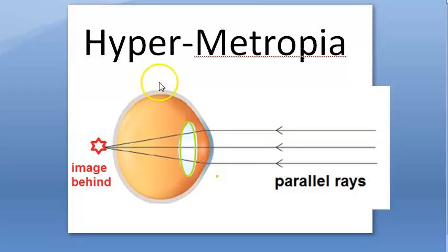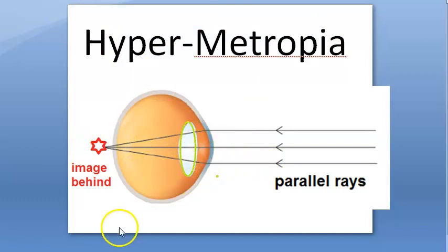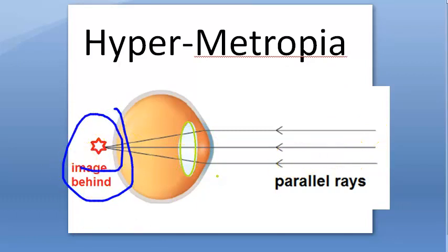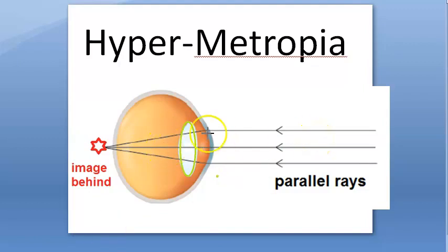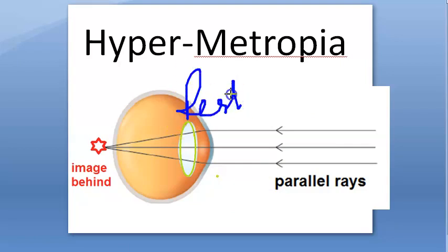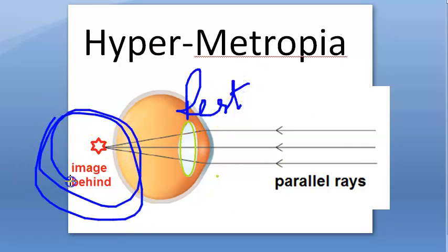Look at the definition of hypermetropia. When the accommodation is at rest — so the lens is flat — any parallel ray coming from even a distant object will be focused behind the retina only. If the accommodation is at rest, the image will be formed at the back.